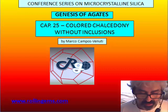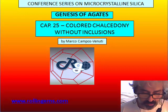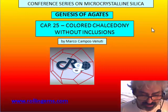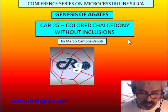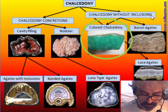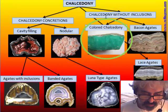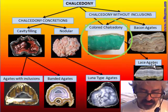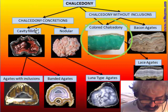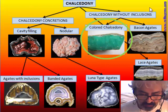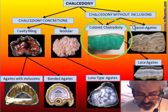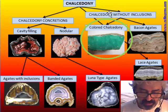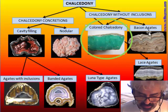In our previous video we saw chalcedony with inclusions, with bands, and many different structures inside. But there is a wide group of chalcedony — the most used in gemology — that are very colored but without any kind of inclusion and without bands. So we have updated this scheme of chalcedony to include this new material: chalcedony concretions, agate, and chalcedony without inclusion. We will speak about colored ones, we already spoke about lace, and we will speak about bacon in the next chapter.